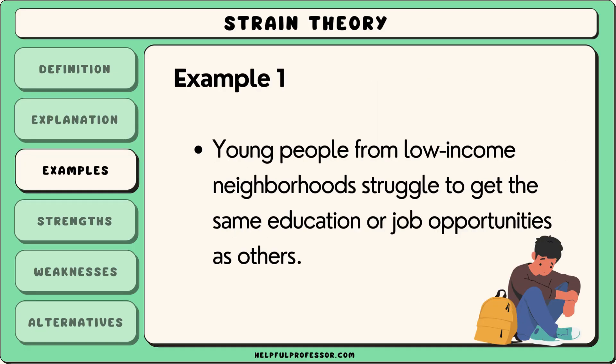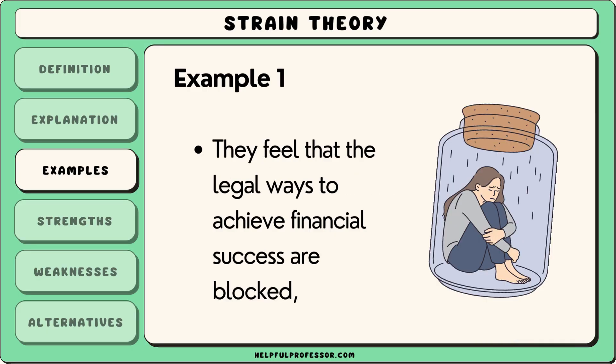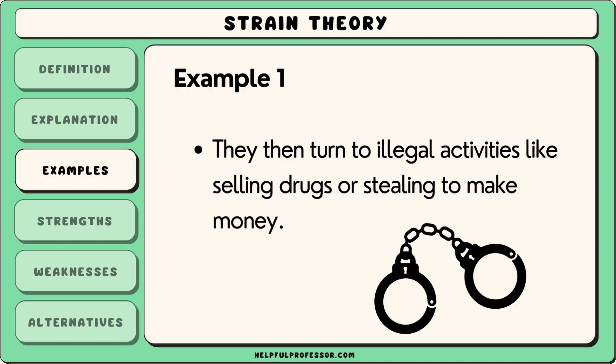An example of strain theory can be seen in situations where young people from low-income neighbourhoods struggle to get the same education or job opportunities as others. If they see financial success as an important goal but feel that the legal ways to achieve it are blocked, they might turn to illegal activities like selling drugs or stealing to make money.